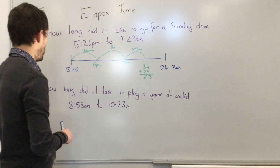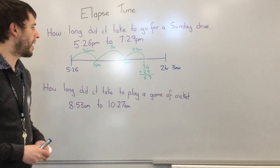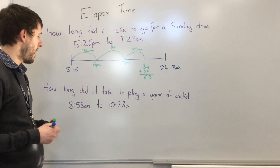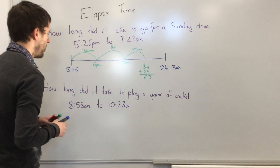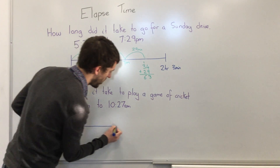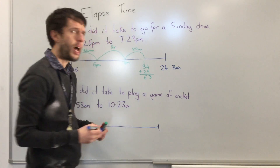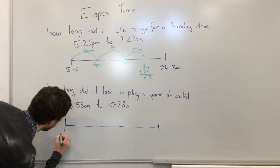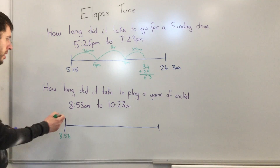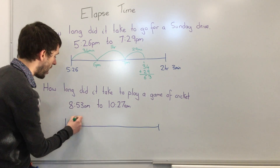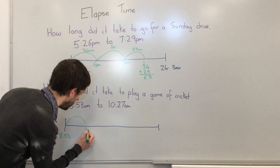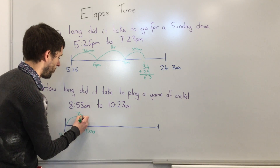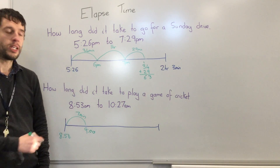Let's have a go with another question. How long did it take to play a game of cricket? The time is 8:53 a.m. to 10:27 a.m. First thing I'm going to do is draw a number line, or timeline, and break it down into smaller chunks. Starting at 8:53 — how many minutes to the next hour? The next hour is at 9 o'clock, and that is just adding 7 more minutes. We can also do 60 take 53 equals 7.